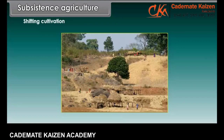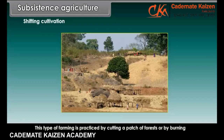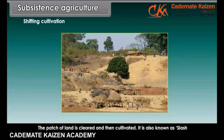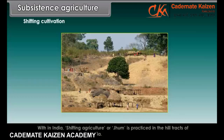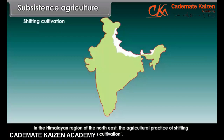Shifting cultivation is practiced by cutting a patch of forest or by burning bushes. The patch of land is cleared and then cultivated. It is also known as slash and burn agriculture. In India, shifting agriculture or jhum is practiced in the hill tracts of Eastern and North Eastern India. In the Himalayan region of the North East, the practice is also known as jhum cultivation.